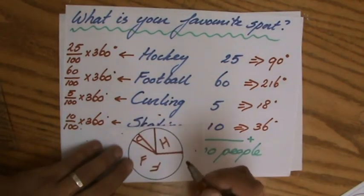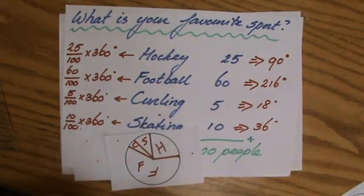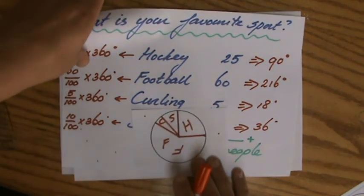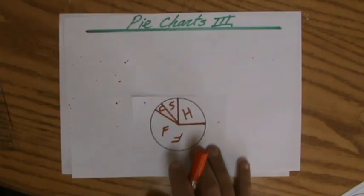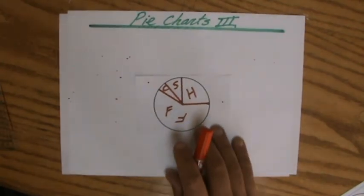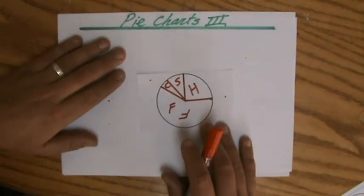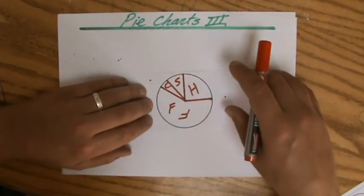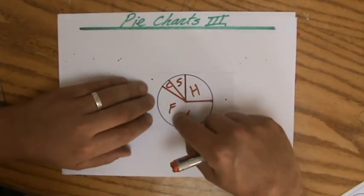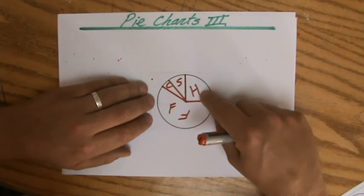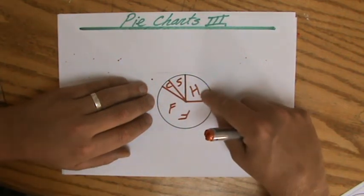And then an S for speed skating. If I would just have the pie chart left, you could easily say football is the most popular sport. A quarter of the people like hockey, and curling is the least popular sport. That makes sense, right? I mean, come on, who likes curling?